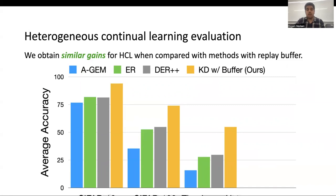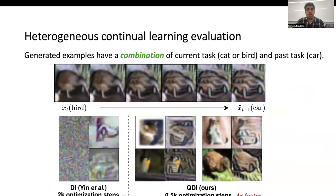These results are with task incremental learning. We also provide results with class incremental learning along with the forgetting in the main paper. We also show a visualization of the generated examples. We can see that we interpolate between the current task — say a bird — to the prior task, which is a car. Deep Inversion mostly contains features from the prior task, which is a car, because the initialization is done from a normal distribution. But our method, QDI, actually contains features from both the classes — as we can see in the figure, it contains examples from both a car and a bird.